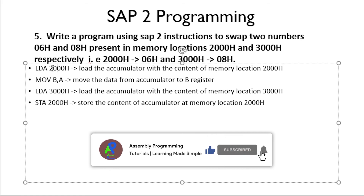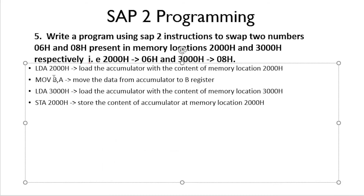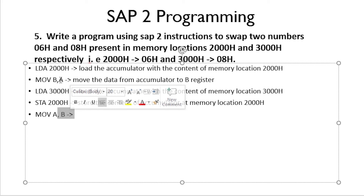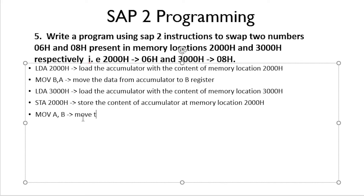Earlier we moved the content of 2000H — that is 06H — into register B. Now we need to move the content of register B back into the accumulator. In SAP 2 we use the MOV instruction: MOV A, B. Here A is the destination and B is the source — the opposite of before. This instruction moves data from register B to the accumulator, so we will have 06H in the accumulator.